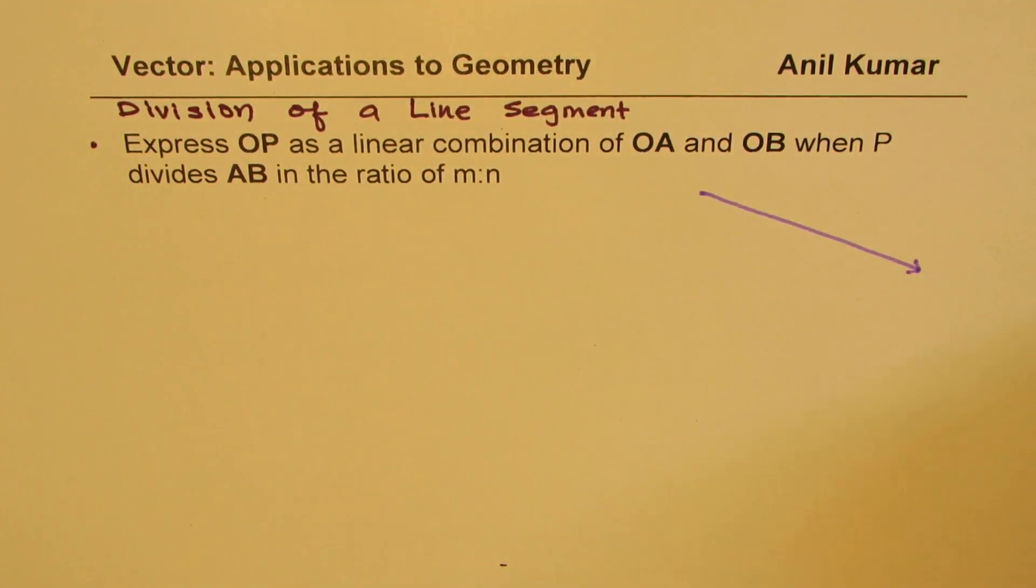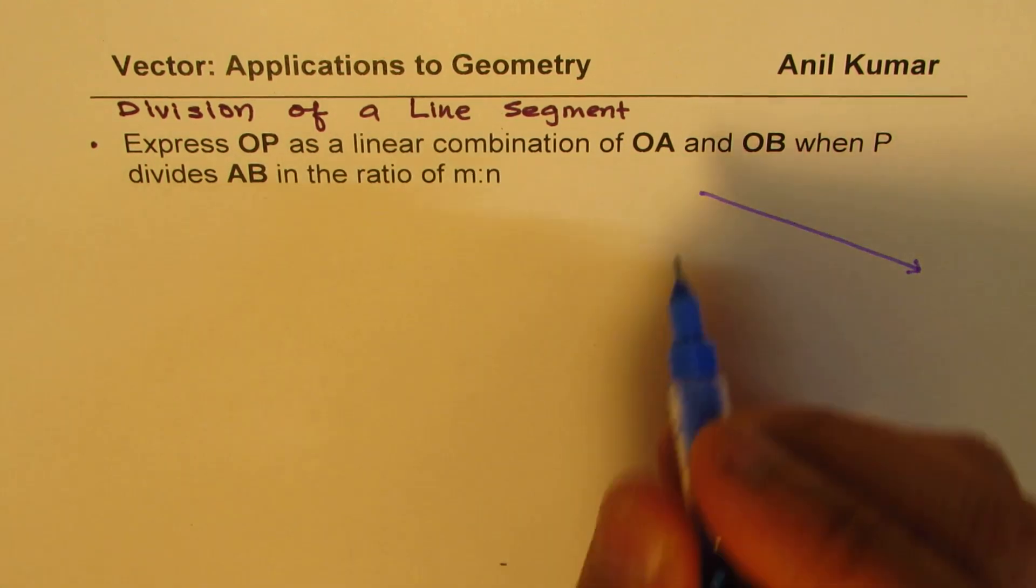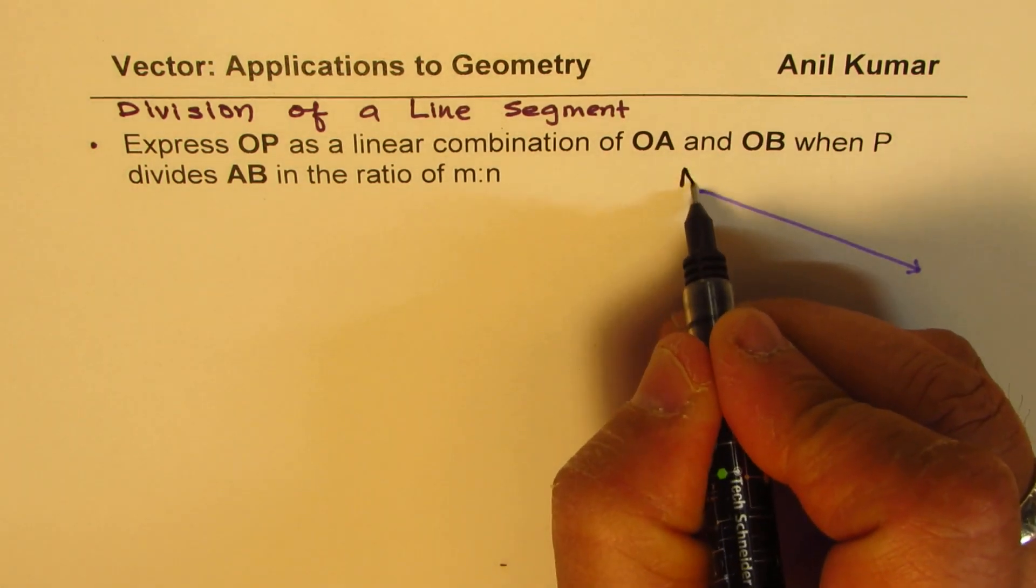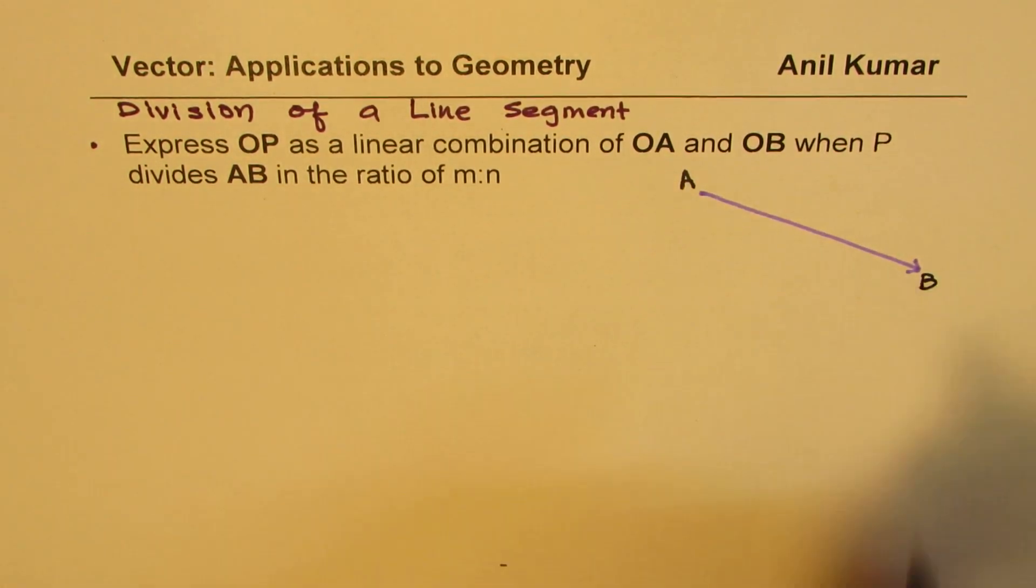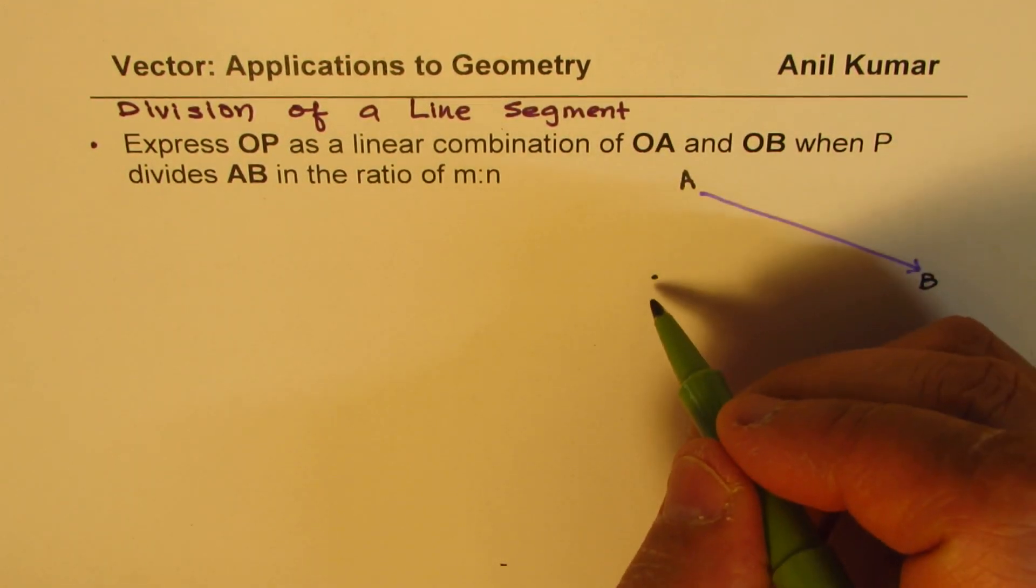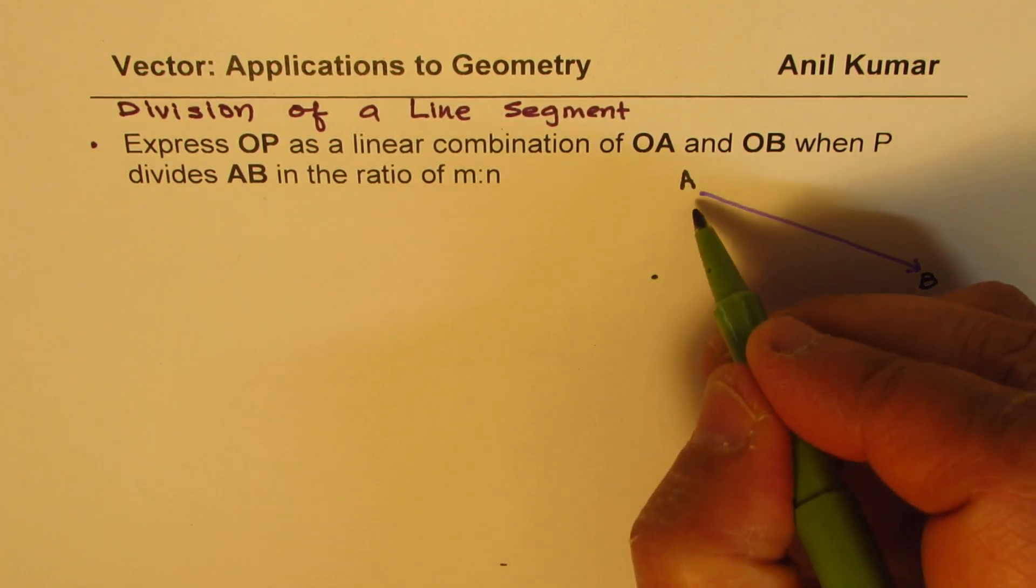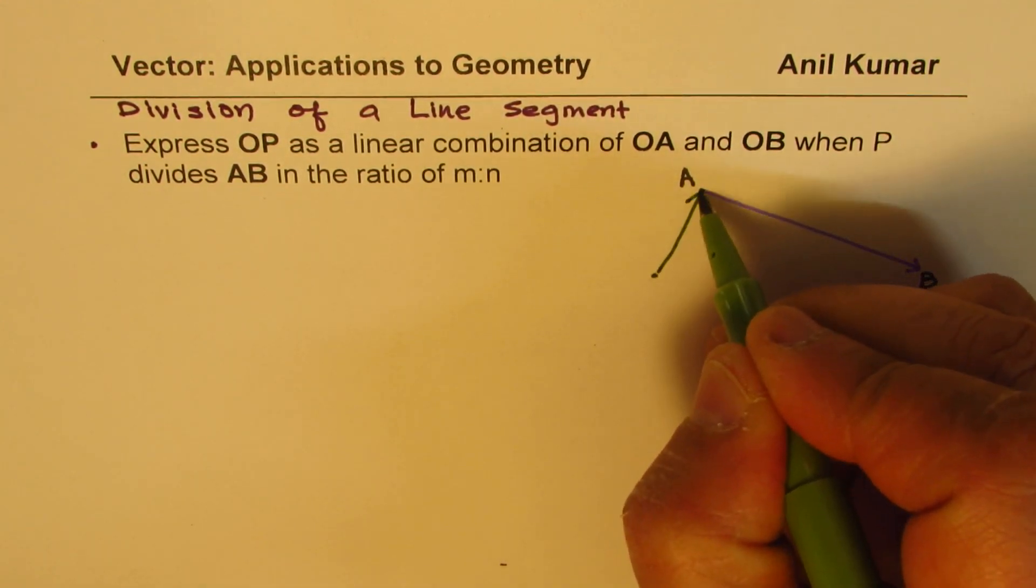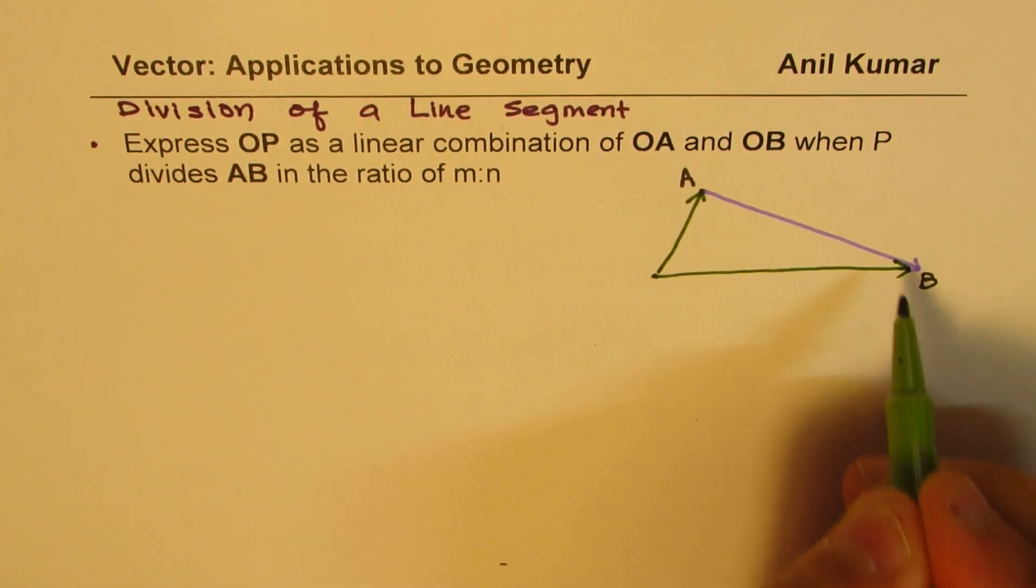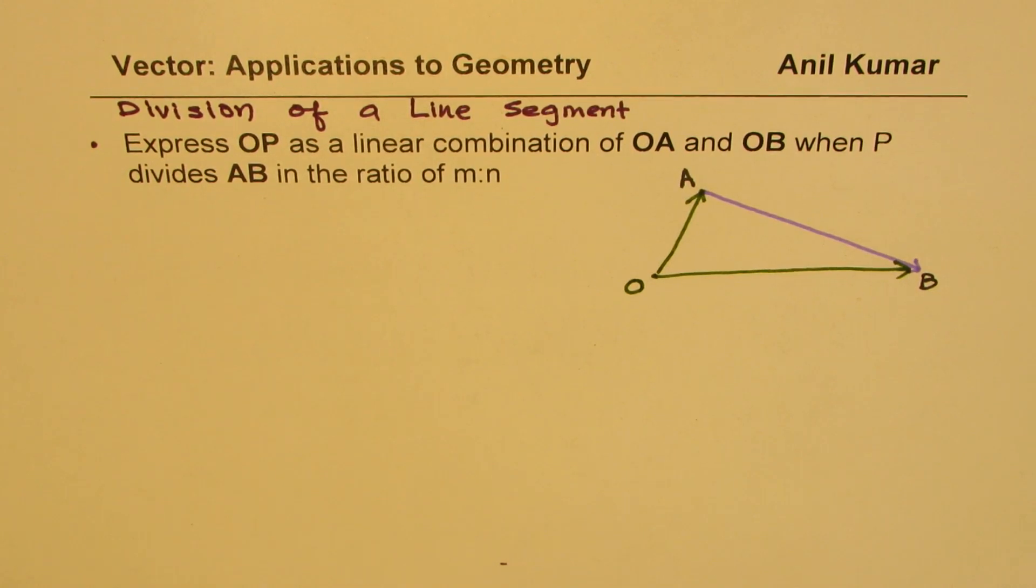Let us say we have a vector AB. Let us take any external point O. You could think as if it is from origin, so you get a position vector OA from here and OB. These become your position vectors if O is considered as a point on the origin.